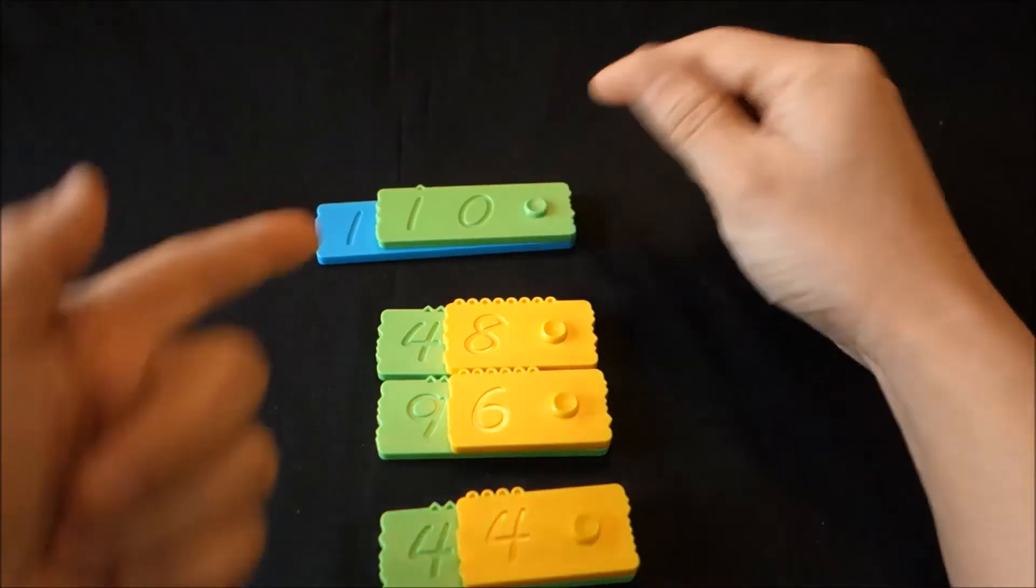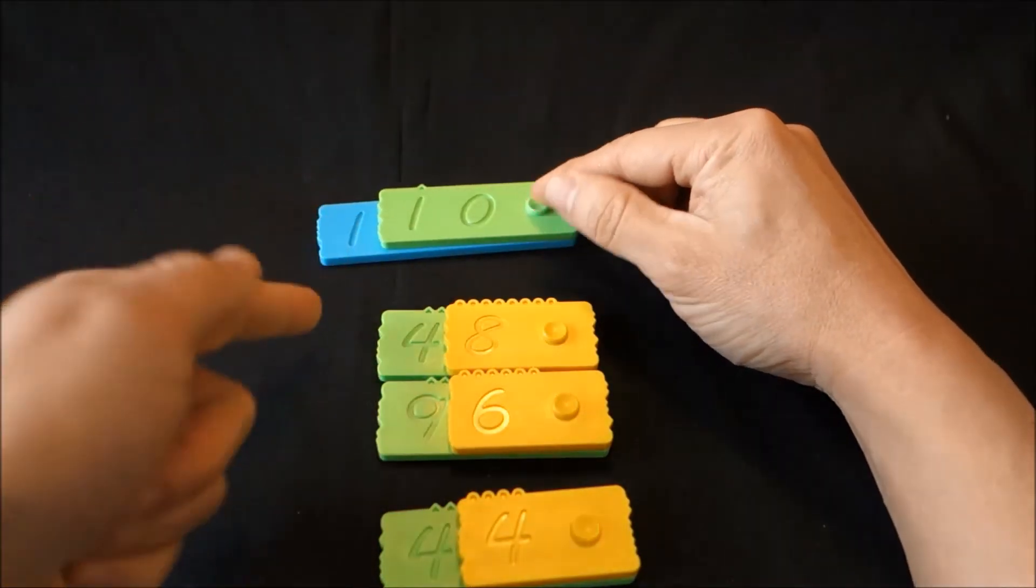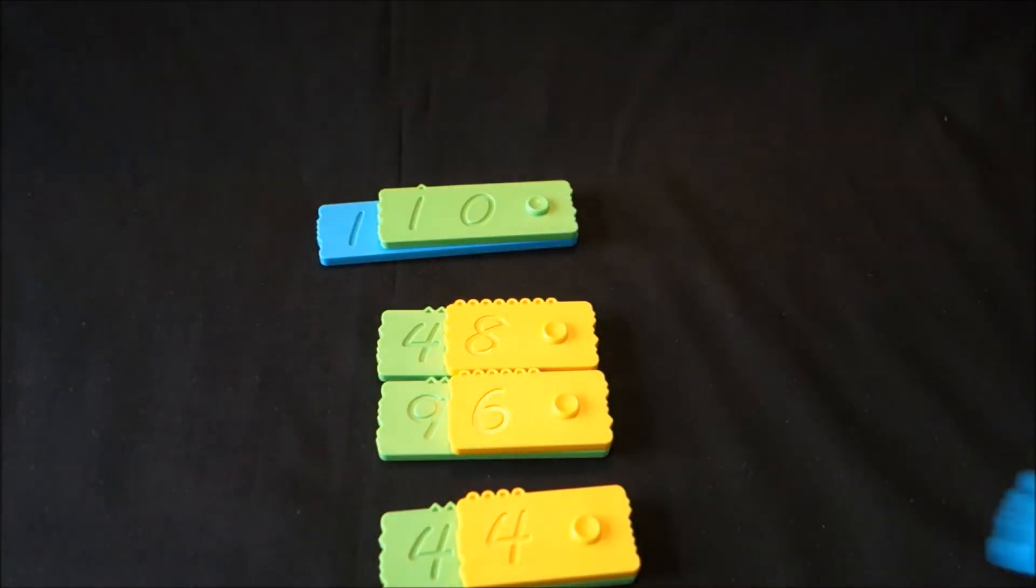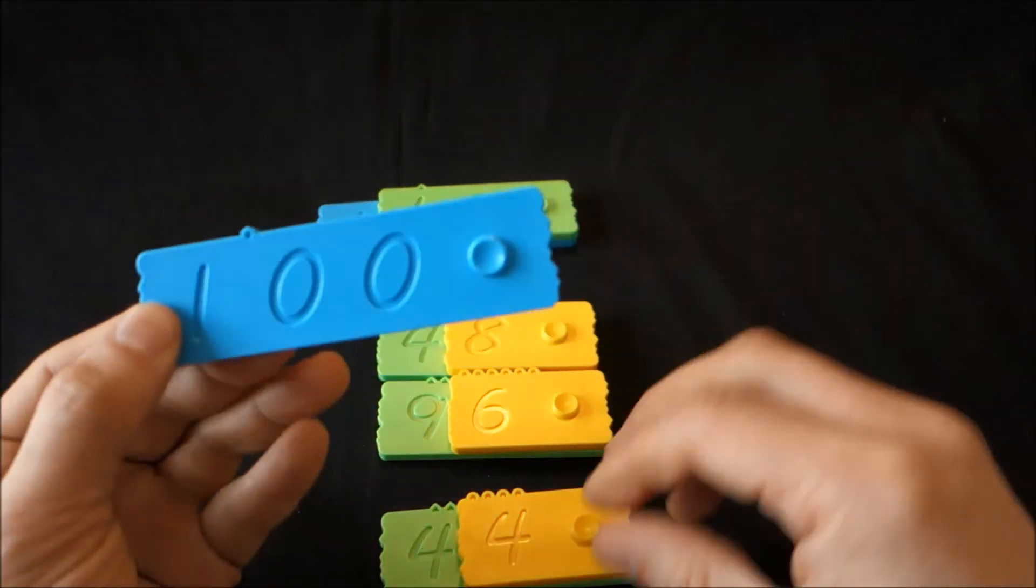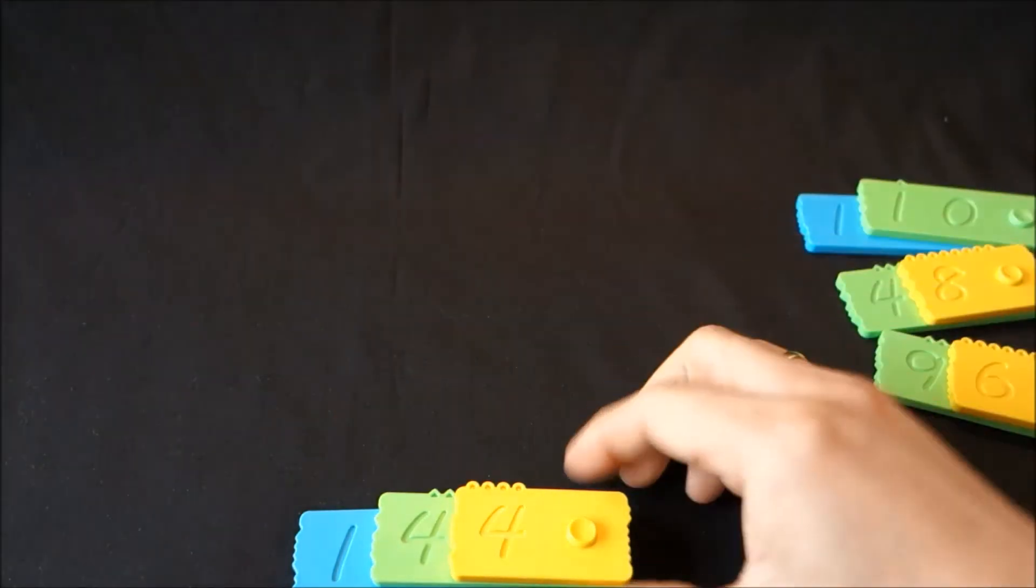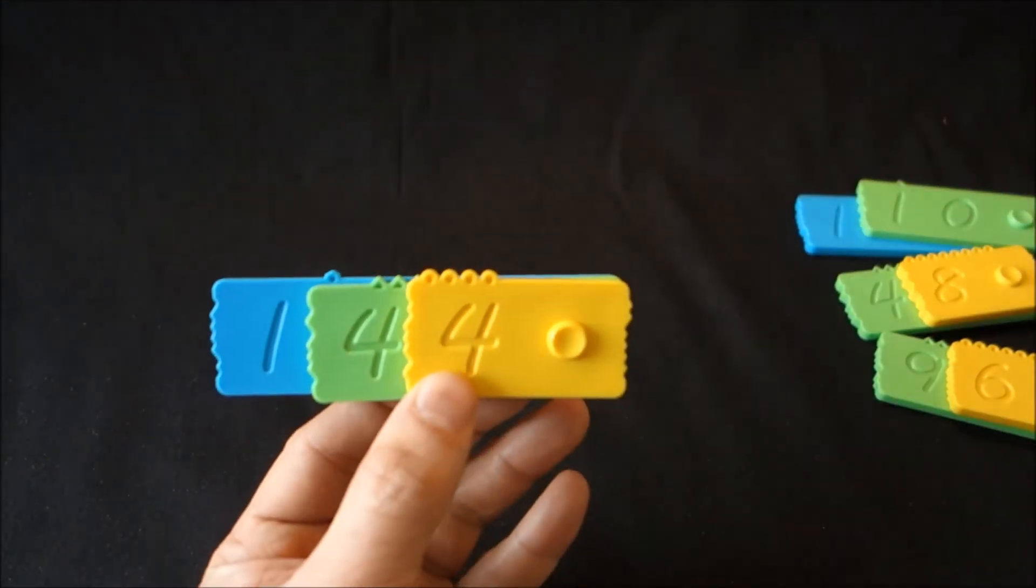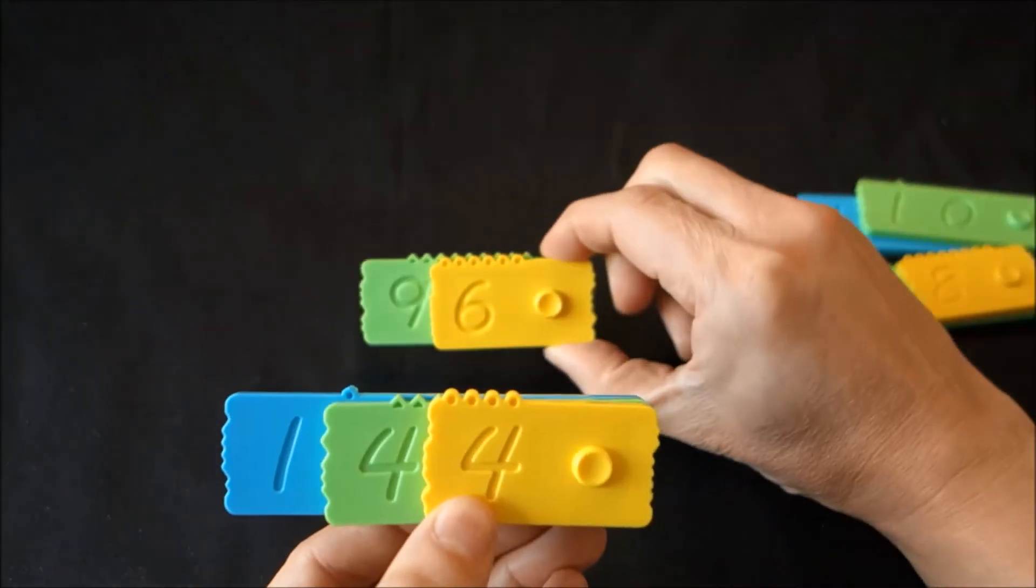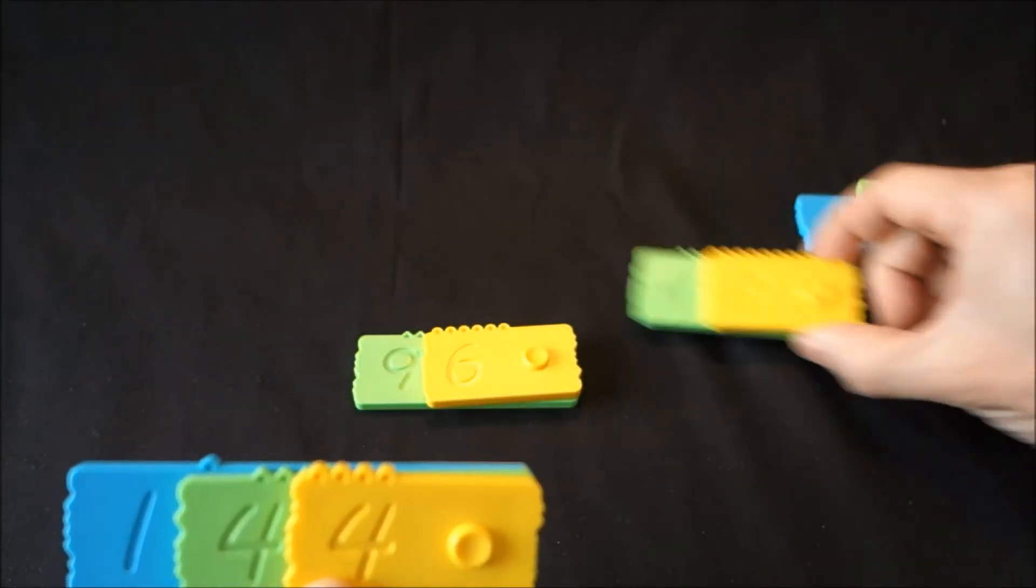And now we put the carry up on top. Let's stack these two. So 100. This is one carry on the position of the hundreds. We add that and that's an easy add. That gives us 100. And here we have the answer: 144 is the sum of 96 plus 48.